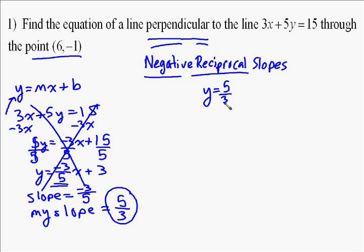Now you need to just find b, so you plug in values you know are true for x and y, which would be the point that we're going through. Plug in negative 1 for y and 6 for x.